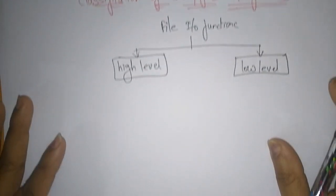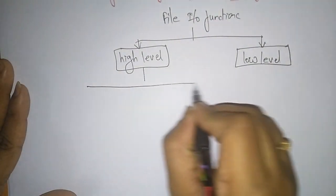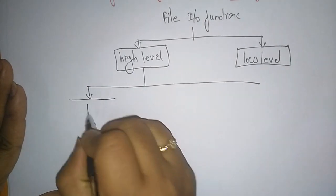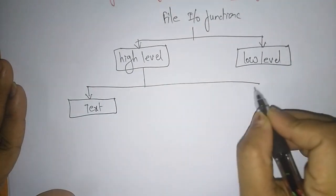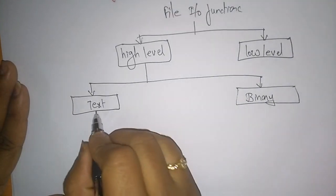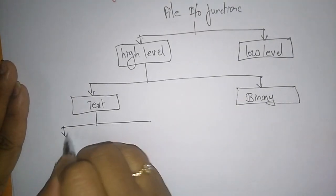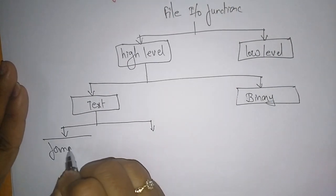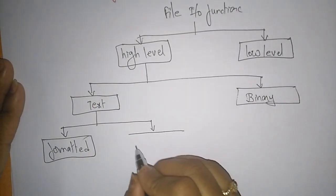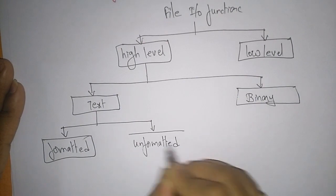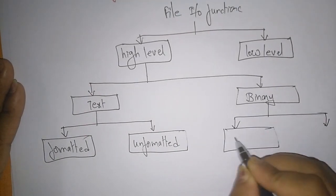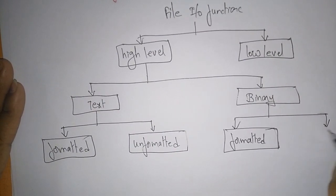Coming to the high level — whatever file stores the data, everything is in the high level. That high level data may be text data or binary data. The text may be formatted or unformatted — the data is stored in formatted or unformatted form. In the same way, the file stored in the form of binary data may also be formatted or unformatted.